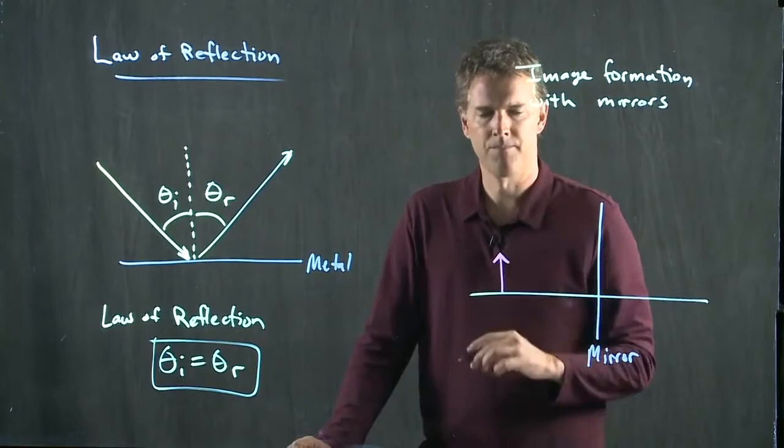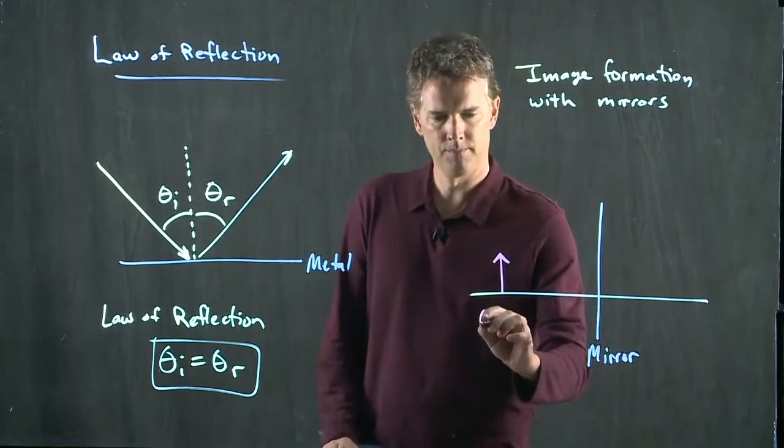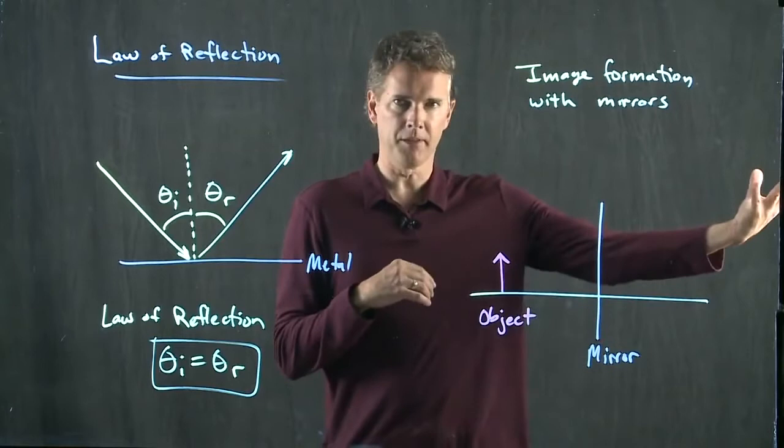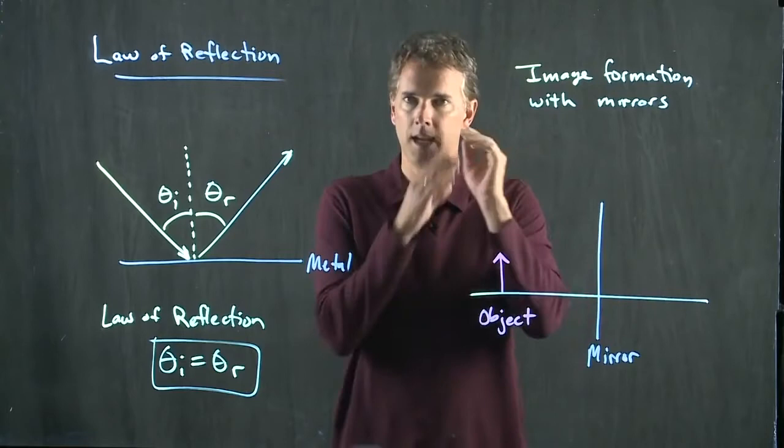What do the rays from that object do? First of all, how are those rays generated at all? Light illuminates the object, just like light from these lamps is illuminating me. Every single point of me is reflecting rays in all directions.